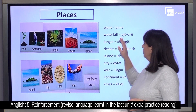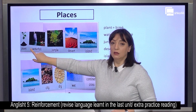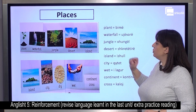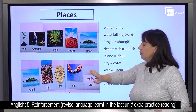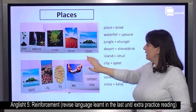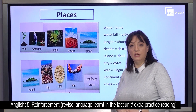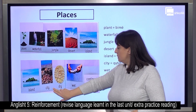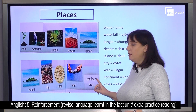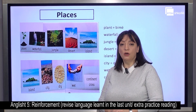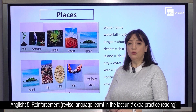What else have we got here? Do you see the vocabulary, the translation? Plant — in Albanian, bimë. Waterfall — ujëvar. Jungle — xhungël. Desert — shkretëtirë. Island — ishulli. City — qytet. And the continent? Where do we live? What continent? We live in Europe. Albania is in Europe — Europe continent.